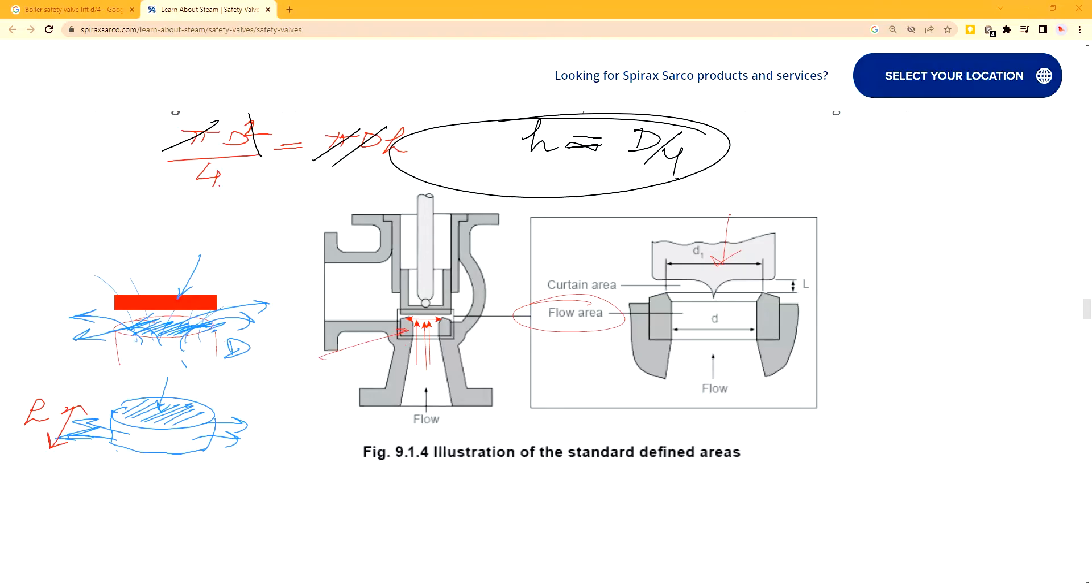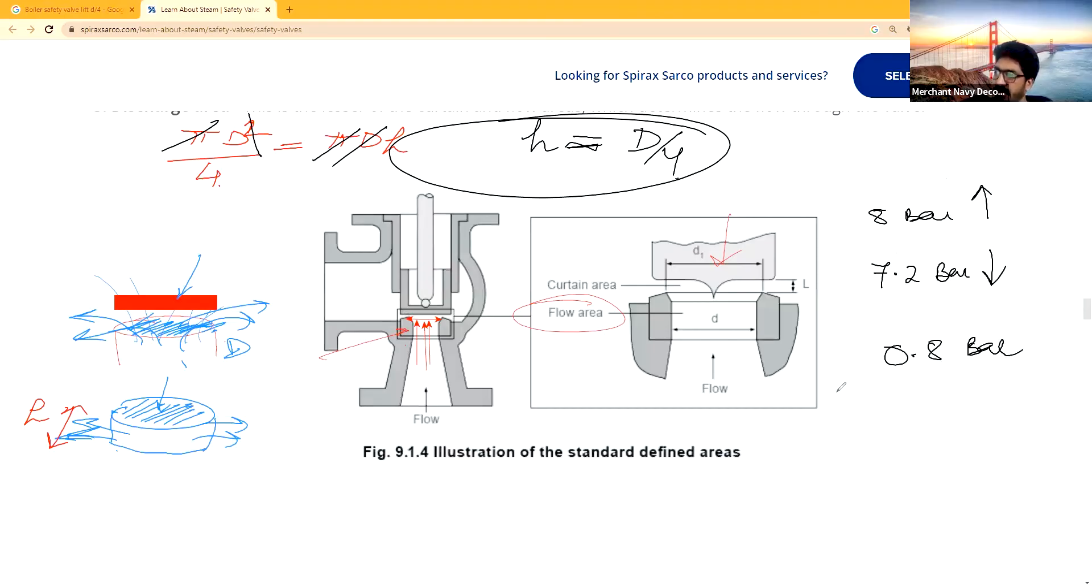There are two pressures basically, the lifting pressure and setting pressure. Because of blow-down, it will not sit at the same pressure it lifted on. For example, let's say lifting pressure is 8 bar. Sitting pressure will be somewhere around 7.2 bar, 0.8 bar. So we have a blow-down of 0.8 bar. Lifting, sitting or reset you can say, and it's called blow-down. These are things you need to remember regarding the pressures.